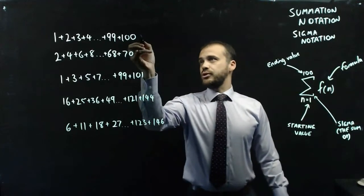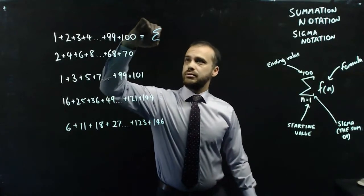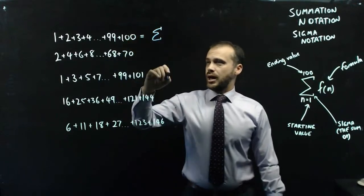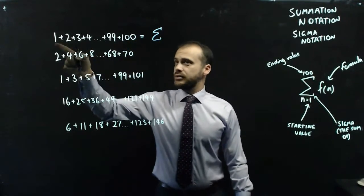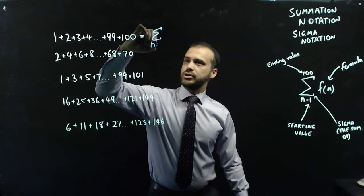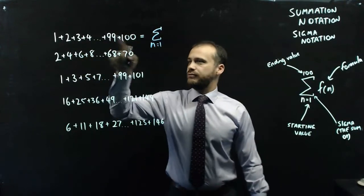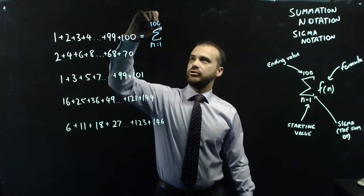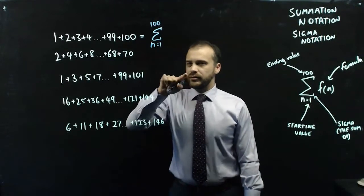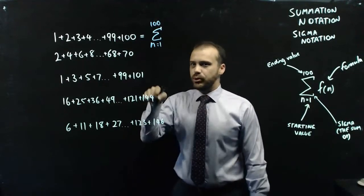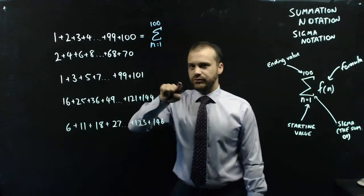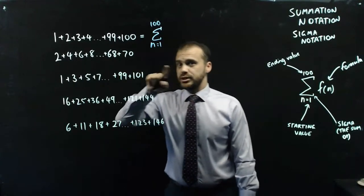The first one's relatively straightforward. We use our sigma symbol here, and then we say my starting value is 1. So far, so good. My final value is going to be 100. Now, what function do I need to put each of the values in? What function do I need to put 1 into? What function do I need to put 2 in?